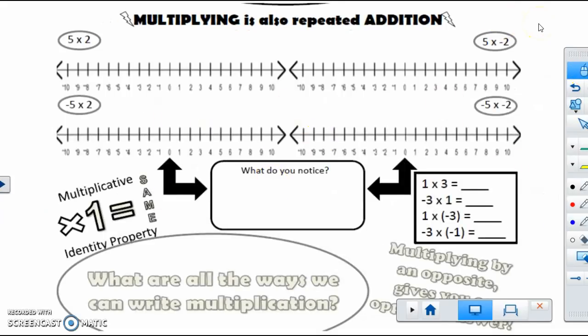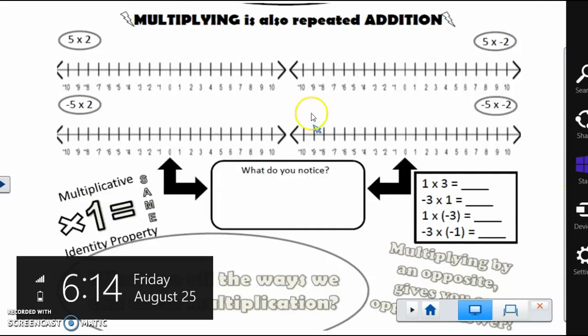Multiplying is also repeated addition — you already know this, it's review. The only difference is we're going to add some negatives. So if I have five times two, that means I have five groups of two, and five groups of two is ten.